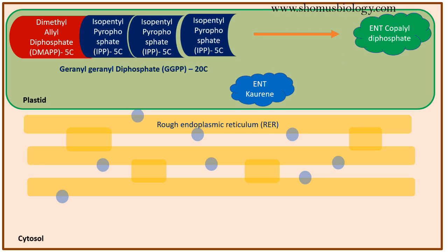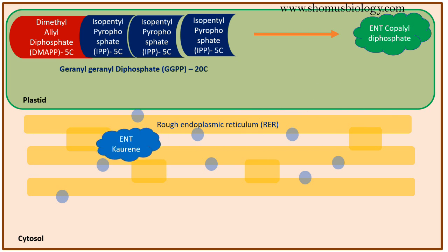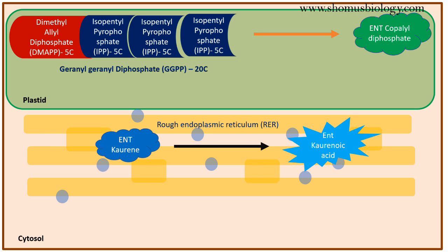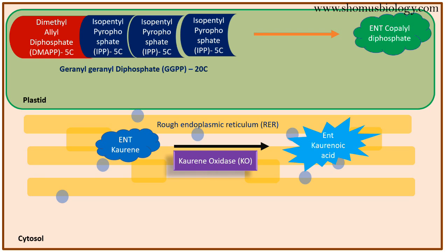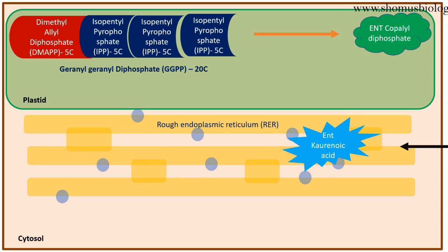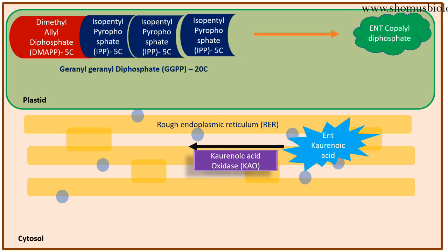ENT-kaurene is then transported into the rough endoplasmic reticulum, where it will be converted into ENT-kaurenoic acid by the enzyme kaurene oxidase — a simple oxidation reaction. The enzyme kaurene oxidase is present in the rough endoplasmic reticulum. This ENT-kaurenoic acid will be further oxidized by the enzyme kaurenoic acid oxidase (KAO).